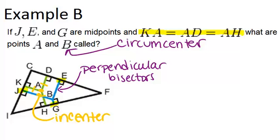Remember also, if we were to draw in a circle, the incenter is the center of the circle that passes through each side of the triangle exactly once. All right, finally, let's look at example C.